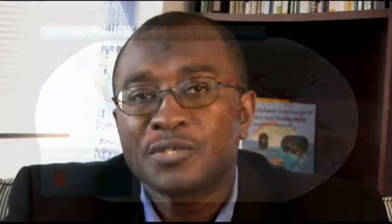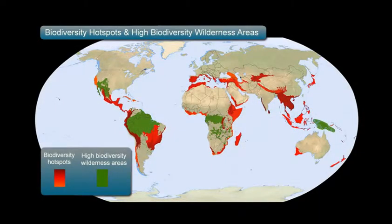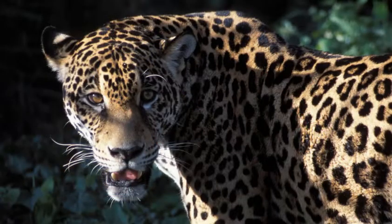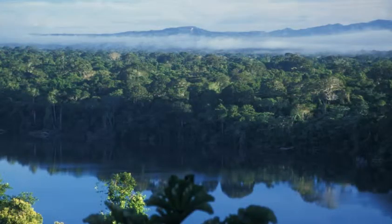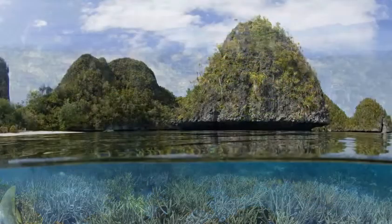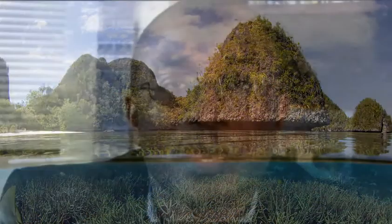We will walk you through an approach for identifying targets to protect nature. We will first discuss global priorities and then focus on identifying targets relating to species, sites, landscapes and seascapes. Our main focus here would be on the site targets, called key biodiversity areas or KBAs.